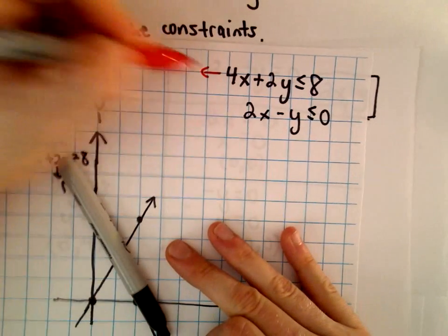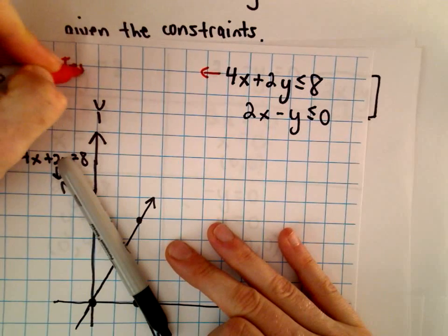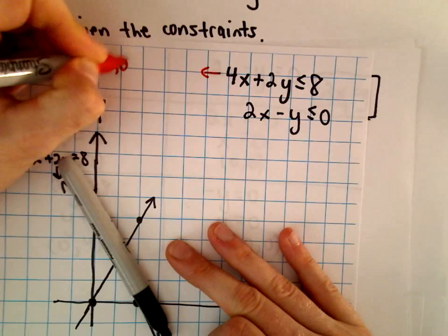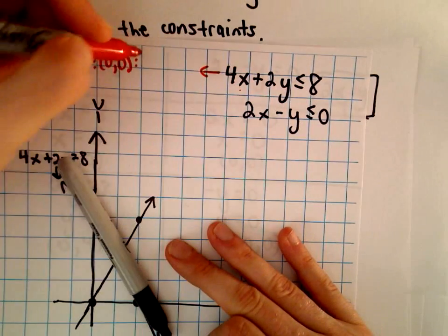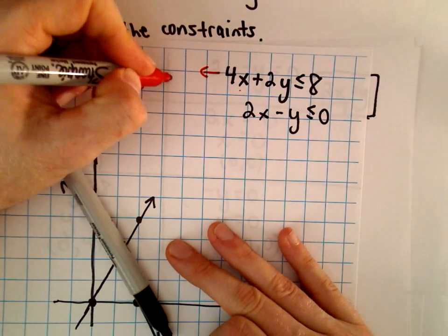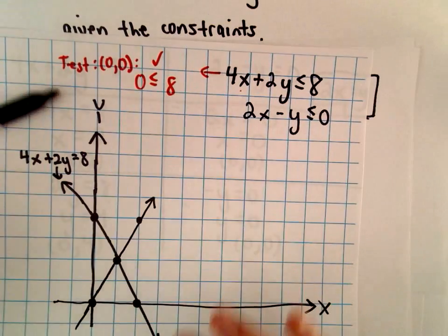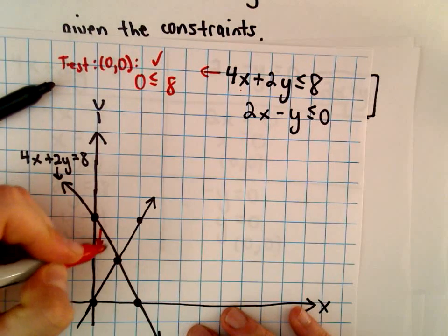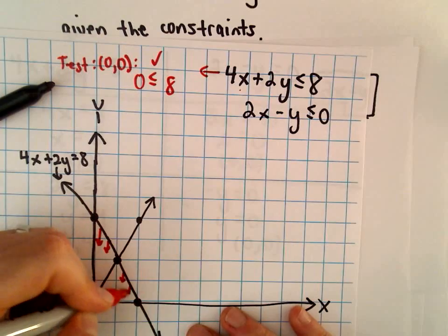So for my first inequality, I'm going to test the point 0, 0. And certainly, if you plug in 0 for x and 0 for y, we would get that 0 is less than or equal to 8. So I know for my first inequality, I would have to shade below.